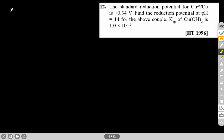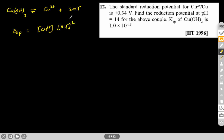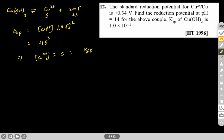Cu(OH)₂ dissociates as: Cu²⁺ + 2OH⁻. The Ksp expression is: Ksp = [Cu²⁺][OH⁻]². If solubility is S, then [Cu²⁺] = S and [OH⁻] = 2S, giving Ksp = 4S³. So concentration of Cu²⁺ = S = (Ksp/4)^(1/3) = (10⁻¹⁹/4)^(1/3).